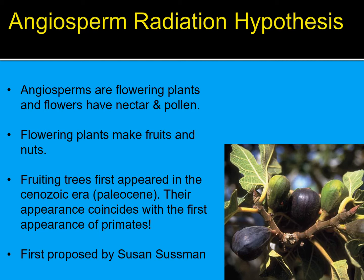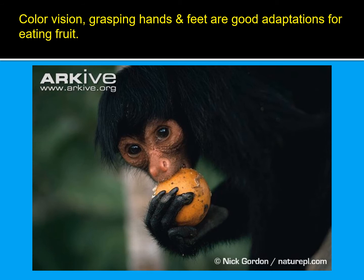Our final hypothesis is not so much a hypothesis but rather an observation. We notice a co-evolution of fruiting trees, which first appeared in the Cenozoic era during the Paleocene, and their first appearance coincides with the first appearance of primates. Flowering plants make fruits, nuts, nectar, and pollen — primates could have arisen in response to this new food source. However, you could also argue you should have seen a huge explosion of birds as well, since they use the same food sources. Many of our traits like color vision and grasping hands are good adaptations for eating fruit.